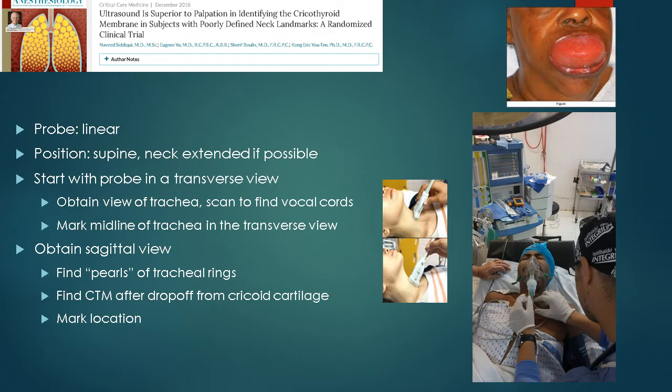In order to do this, you need a linear probe. If possible, you want the patient supine, although sometimes because of stridor or respiratory distress this isn't possible. Ideally, you want the neck extended, but again, often this isn't possible in these patients. You want to start with the probe in a transverse view right here.